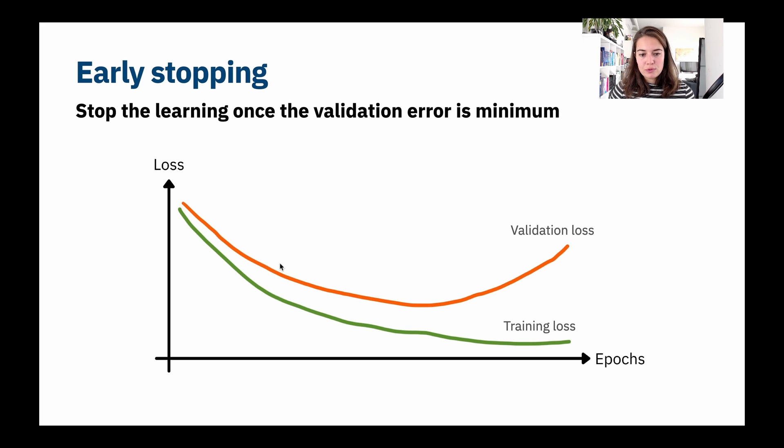But after a while, of course, the validation loss is going to get higher. Or maybe it's just going to keep going straight, right? That could also happen. What we do with early stopping is we just find the point where validation loss is minimum. And then we say, okay, stop now, this is the end.